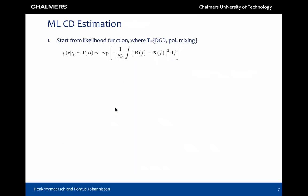We are now ready to solve the maximum likelihood chromatic dispersion estimation problem. Step 1. We express a likelihood function, where r is the frequency domain version of the received signal, and x is a hypothesized signal, with data A, chromatic dispersion eta, delay tau, and combined DGD and polarization mixing with matrix T. For convenience, we do not write these parameters explicitly in x.